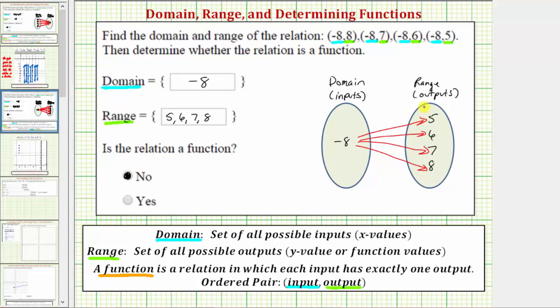Notice how it's very easy to see here that the input of negative eight does not have exactly one output. For this relation, the input of negative eight has four different outputs, and therefore the relation is not a function.